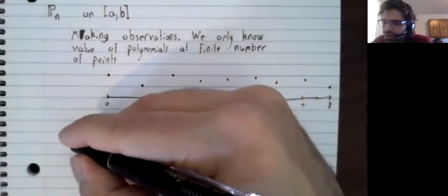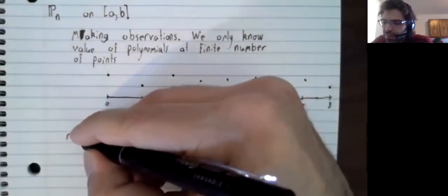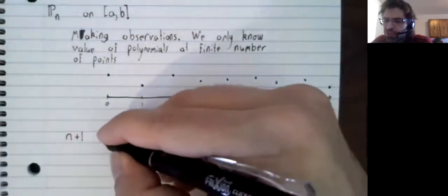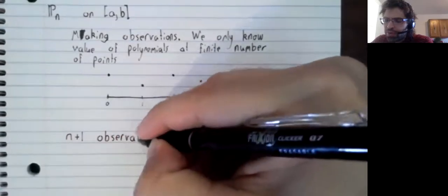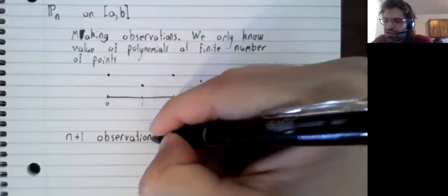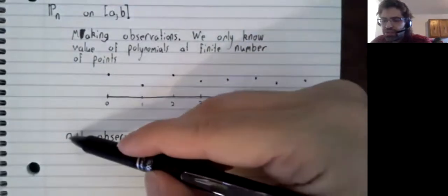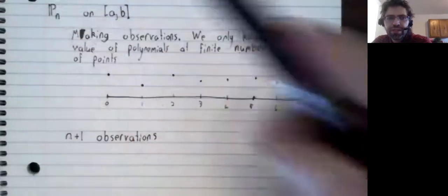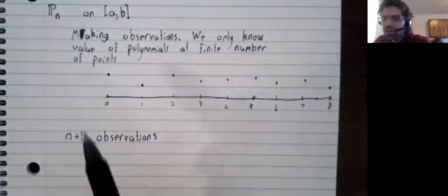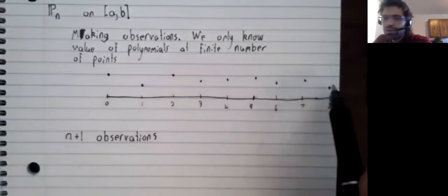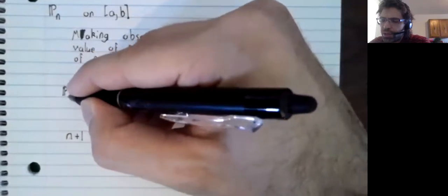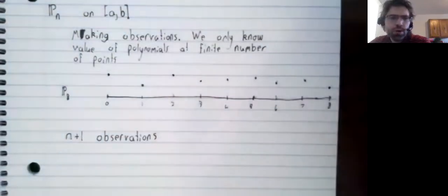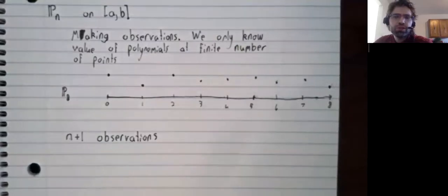So let's say we have n plus one observations where this n and match. So here we have nine observations. We could work with polynomials of degree up to degree eight.